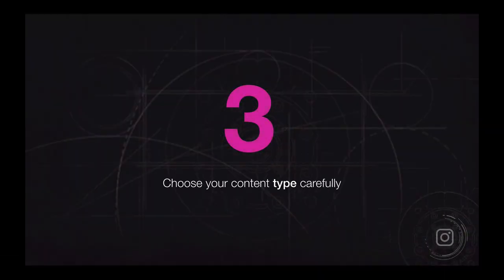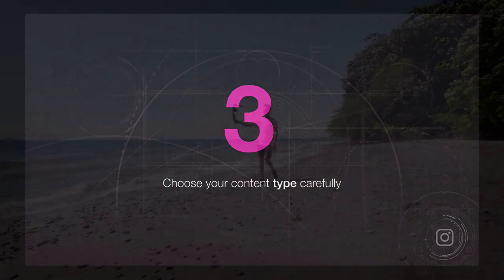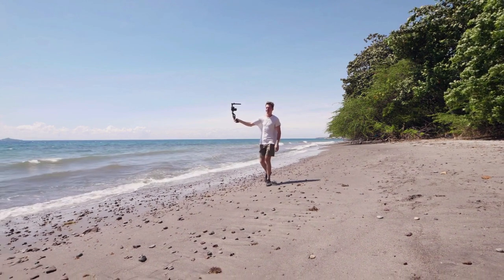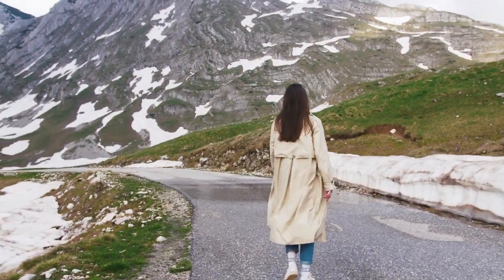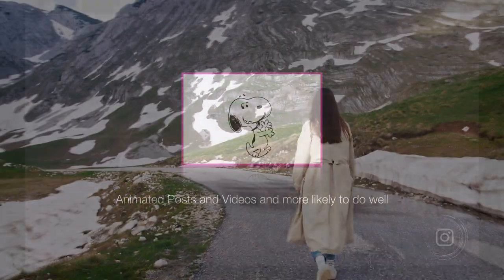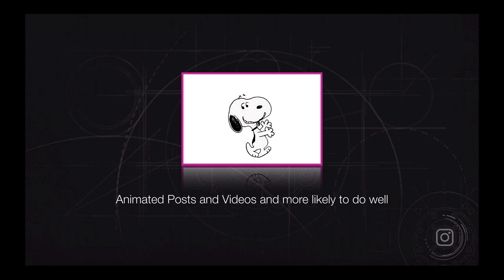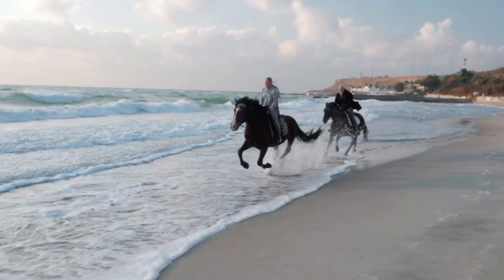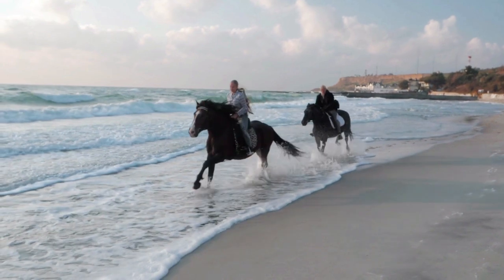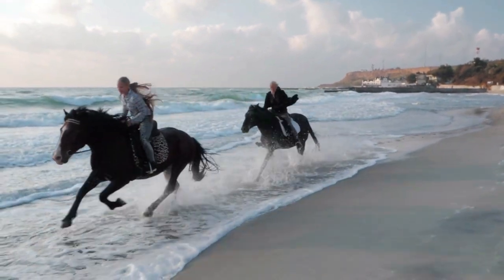Number three, choose your content type very carefully. Animated posts and videos are a little bit harder to make, but they perform on average 80% better than still images. So make sure you're not restricting yourself to still images. You're more likely to be discovered in your niche and more likely to be featured in the Discover tab if you are posting animated photos and videos.